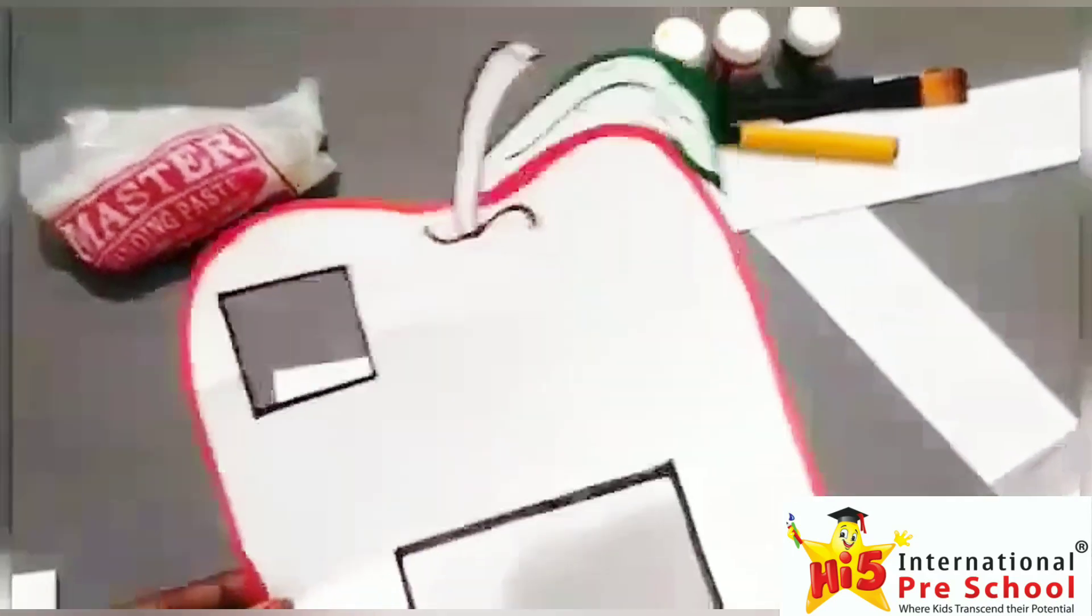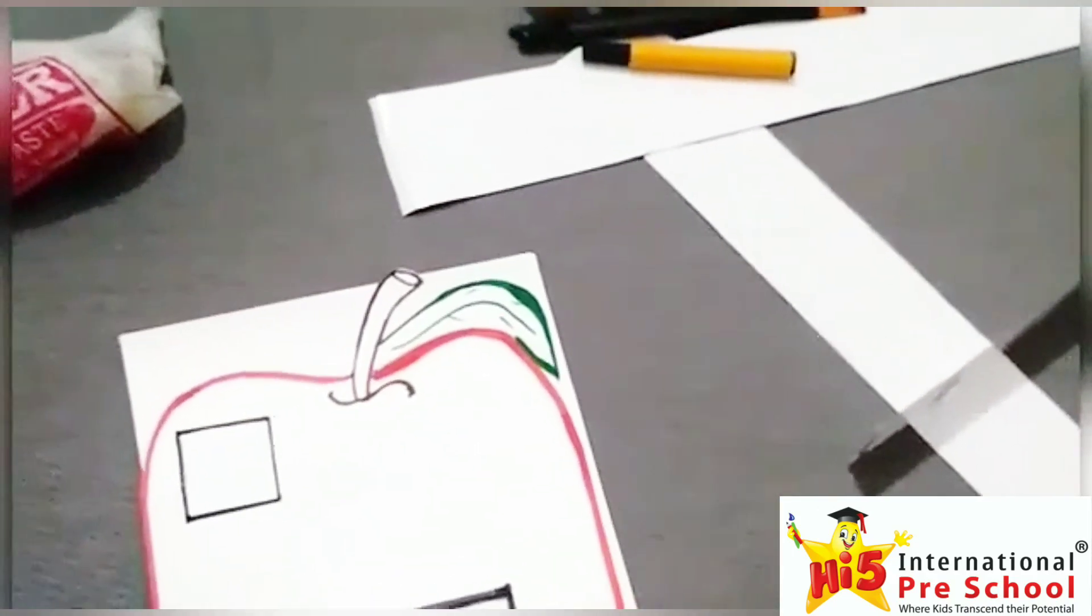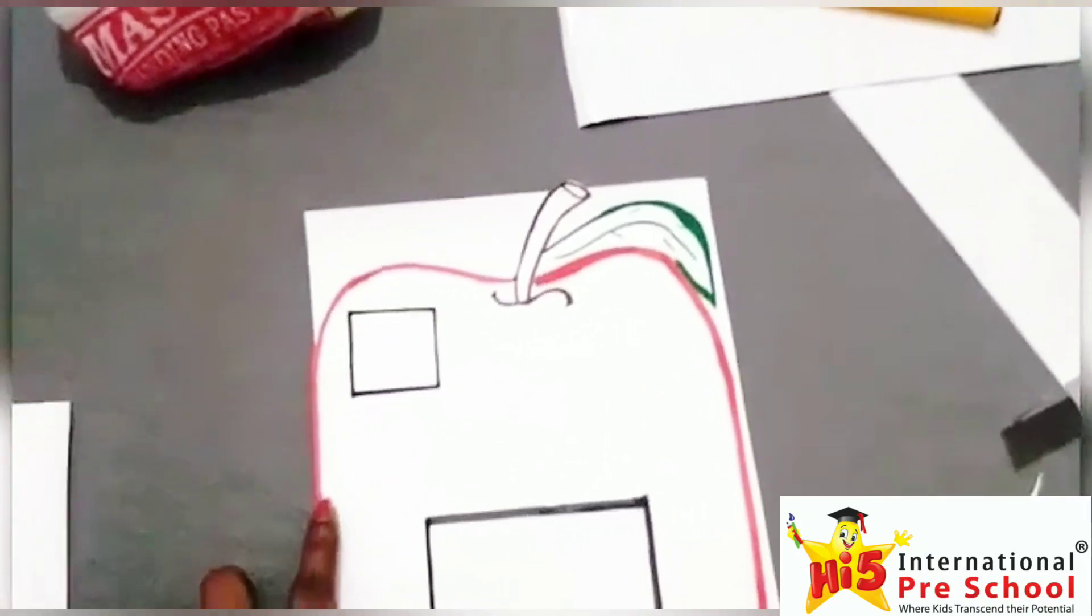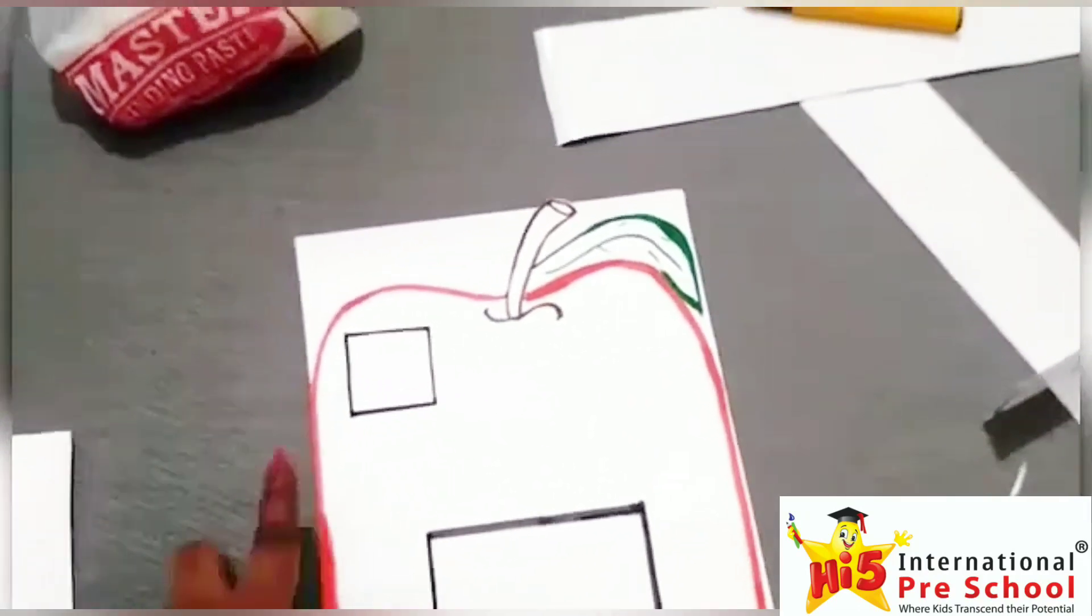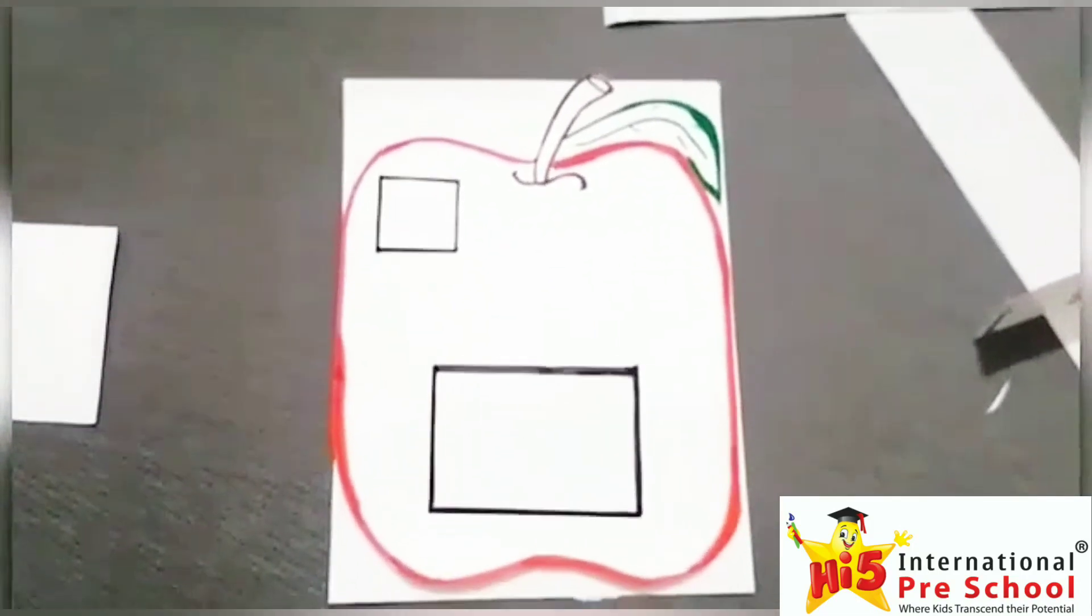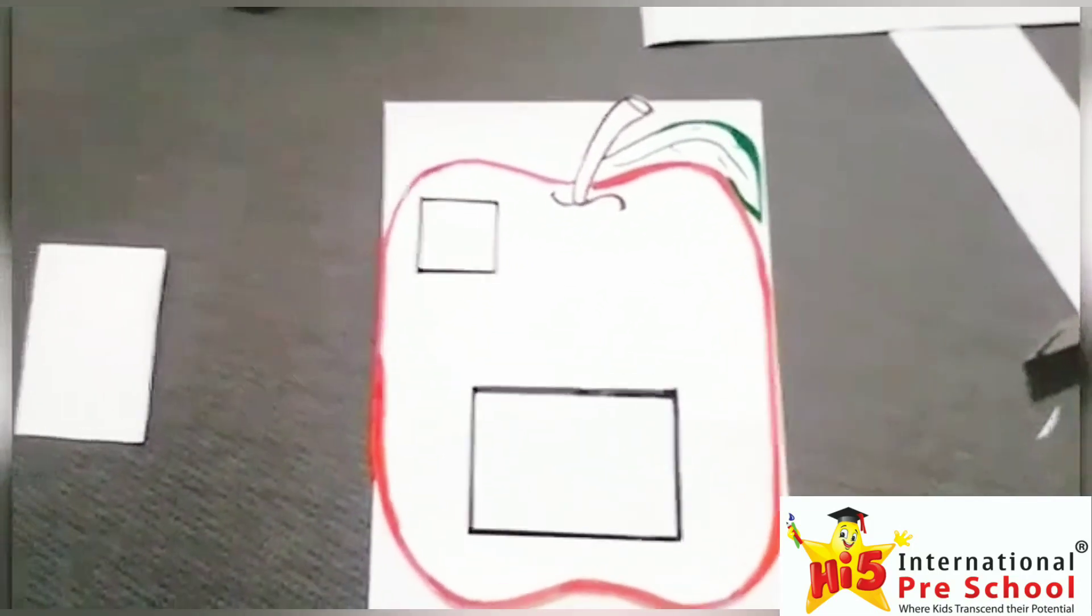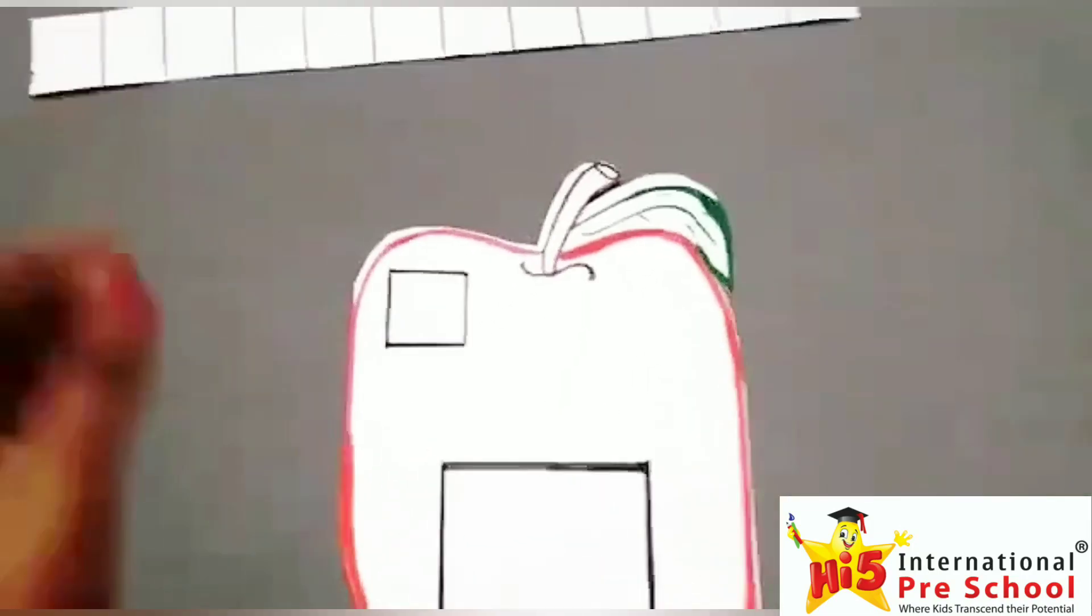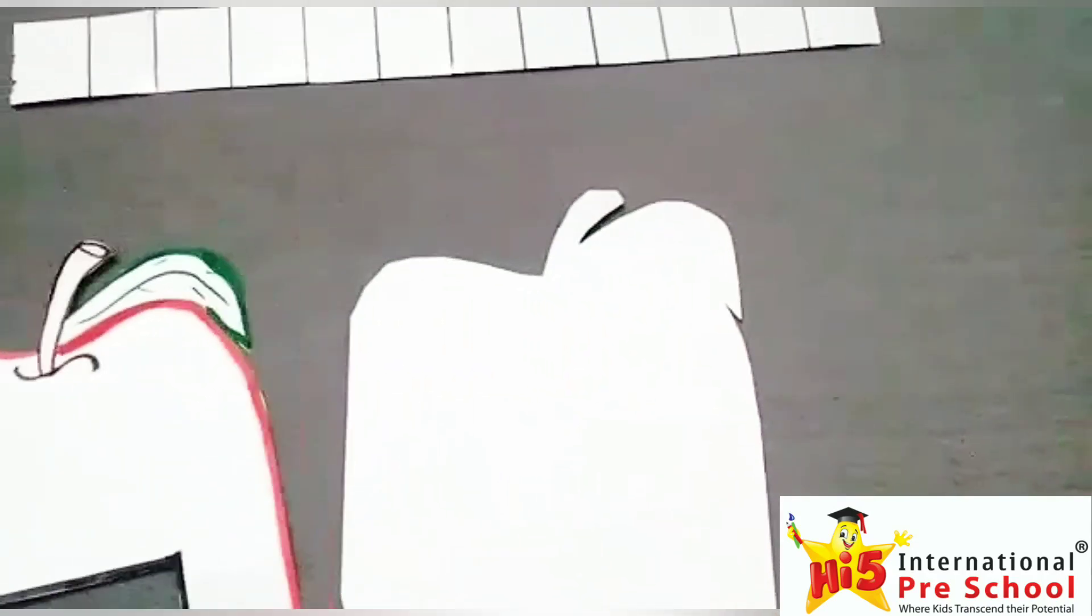Now, place the apple over the other A4 sheet and draw the outline and cut off the edges. You will be having two apple shaped sheets like this.